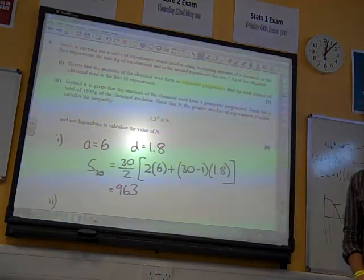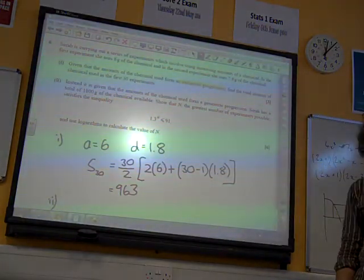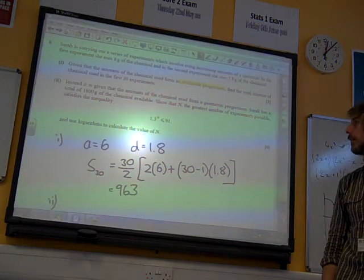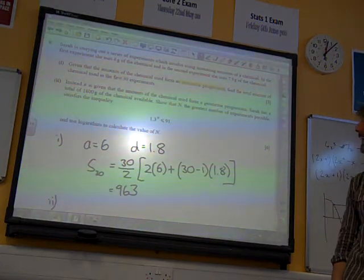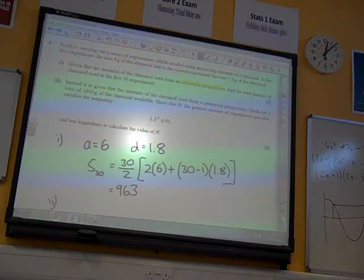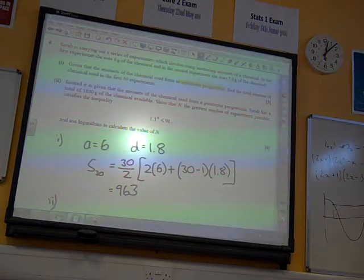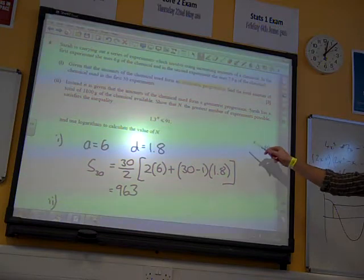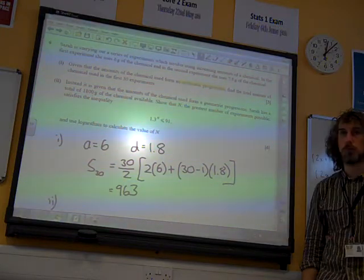Instead, it's given that the amount of the chemical forms a geometric progression. Sarah has a total of 1800 grams of chemical available. Show that n, the greatest number of experiments possible, satisfies that. And we use logarithms to calculate the value of n.